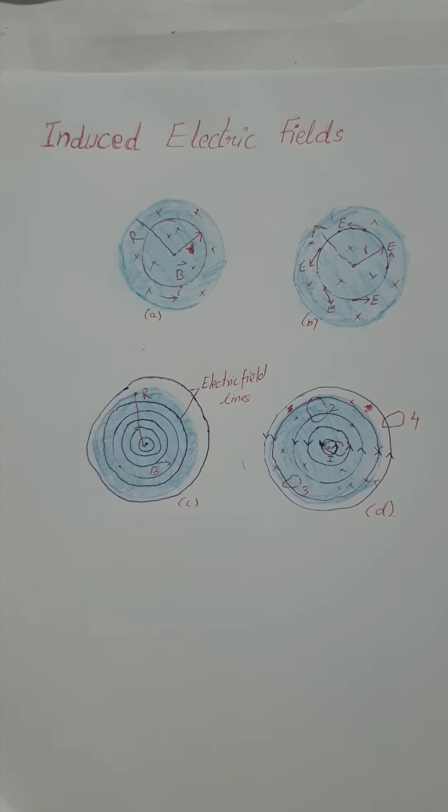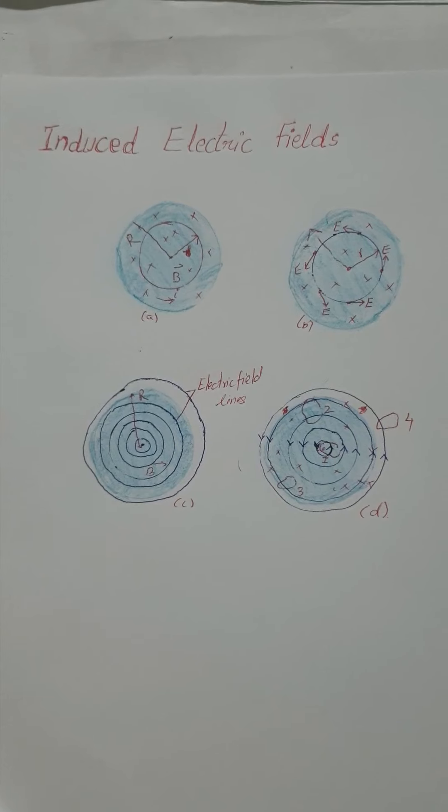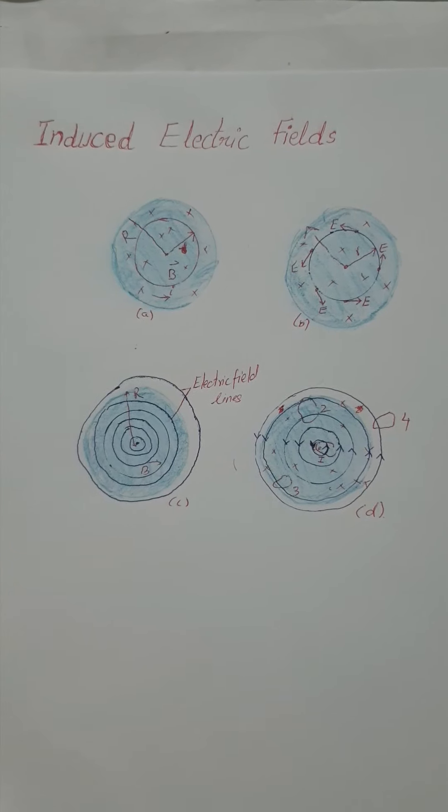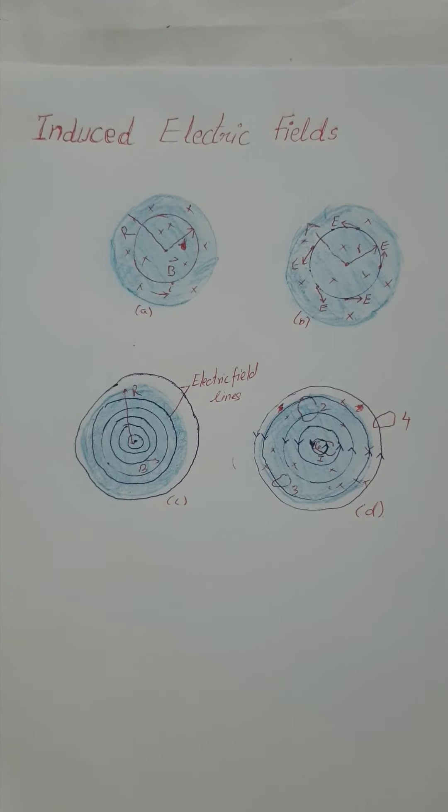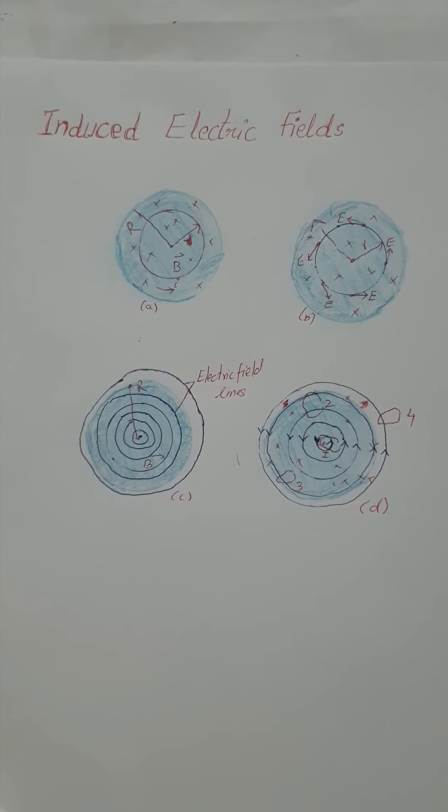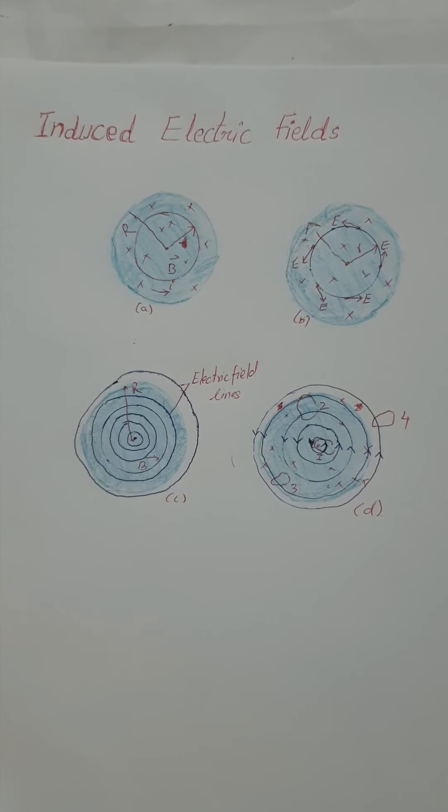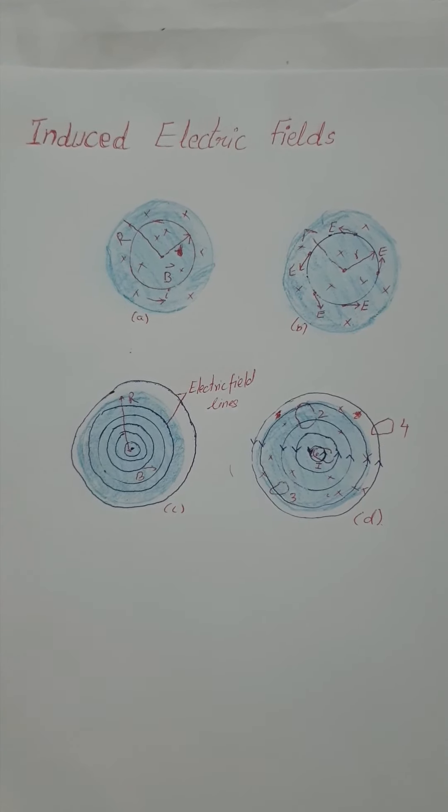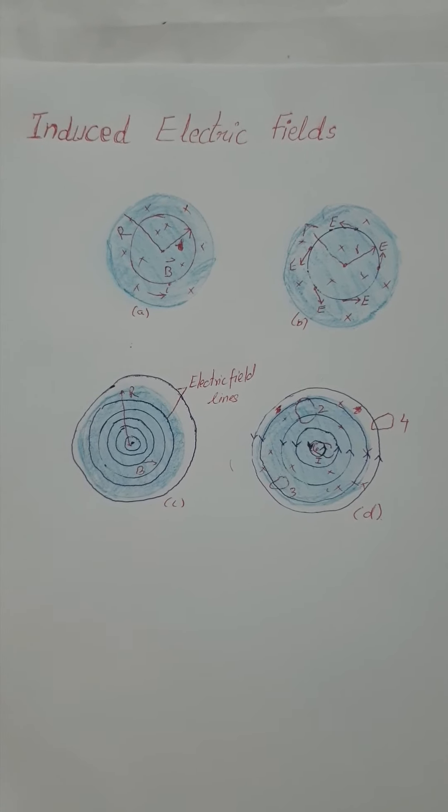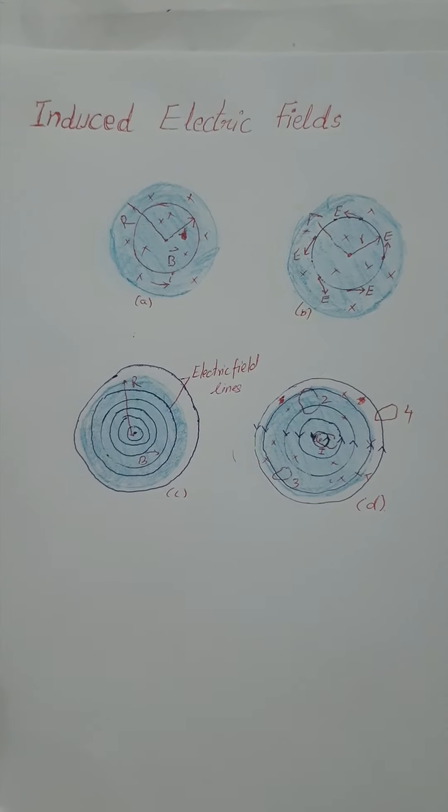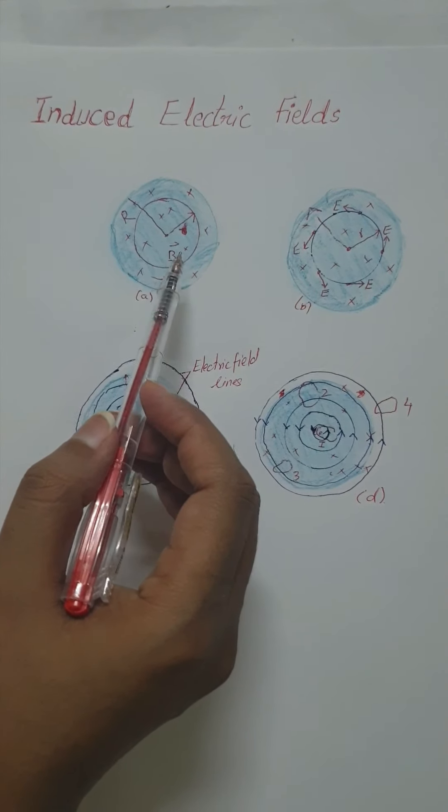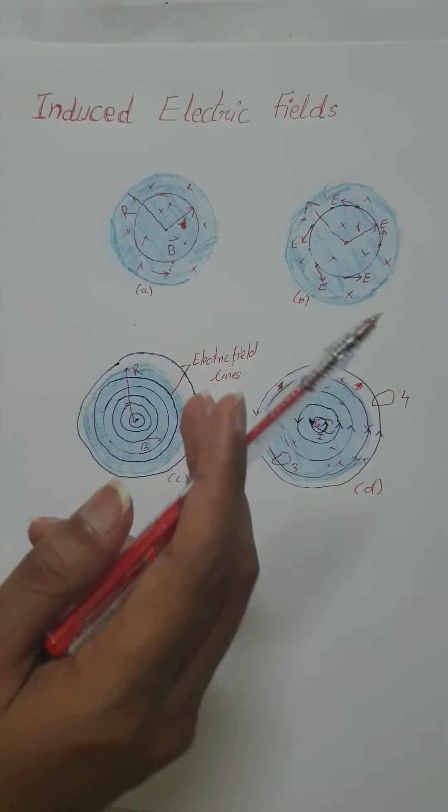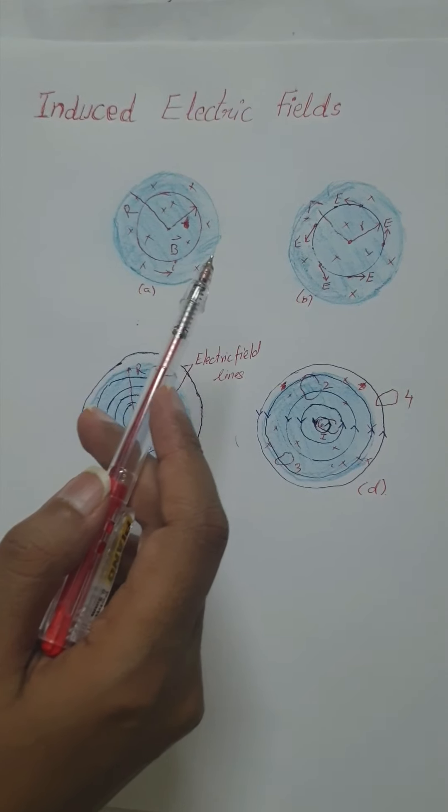When the magnetic flux through the ring changes at a steady rate, by Faraday's law an induced EMF and an induced current will appear in the ring. From Lenz's law we can deduce the direction of the induced current, which is counterclockwise here. So if there is a current in the copper ring, an electric field must be present along the ring because an electric field is needed to do the work of moving the conduction electrons.